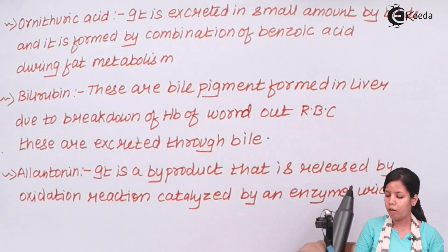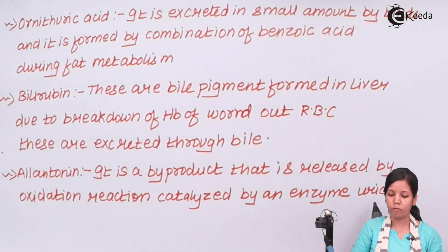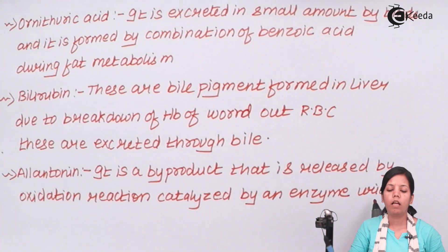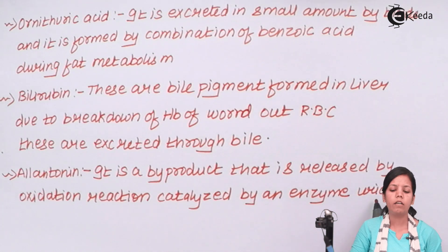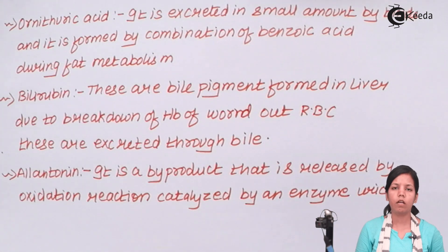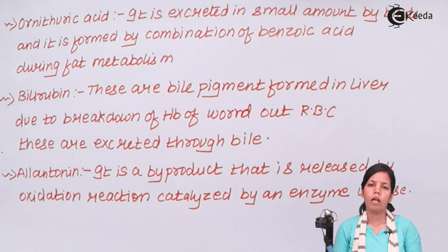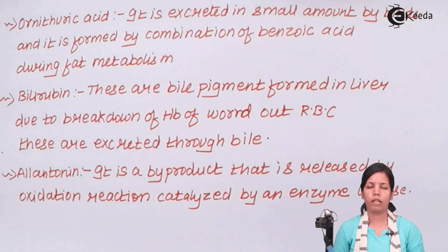Allantoin is a byproduct released by an oxidation reaction catalyzed by an enzyme termed uricase. Allantoin is also associated in small amounts with the embryo of different organisms, especially some terrestrial organisms.